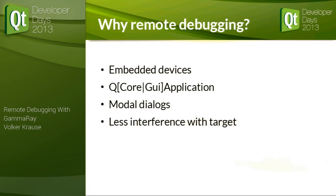So how did GammaRay work so far? We used the DLL that contains the core logic to do the introspection, as well as the actual debugging UI, and injected that into the application we are going to debug. That's very easy to implement. Worked fine. But then a couple of reasons came up to change this.